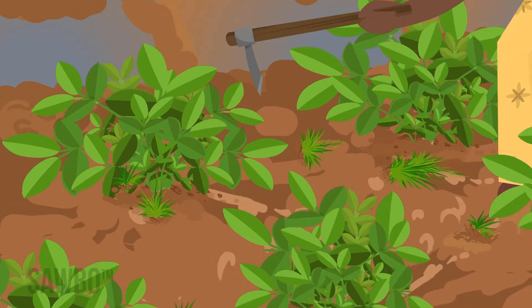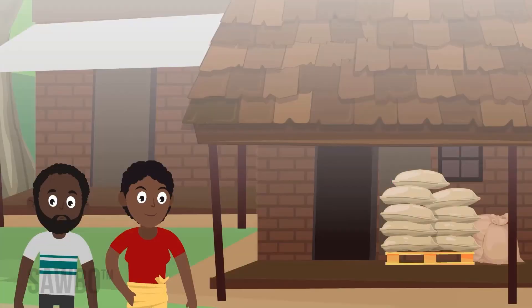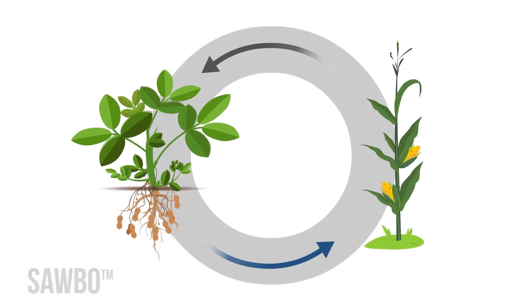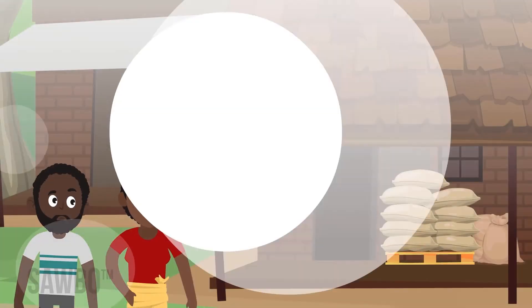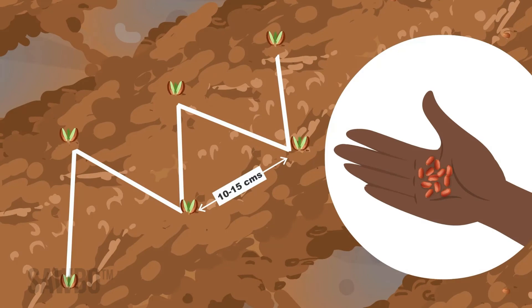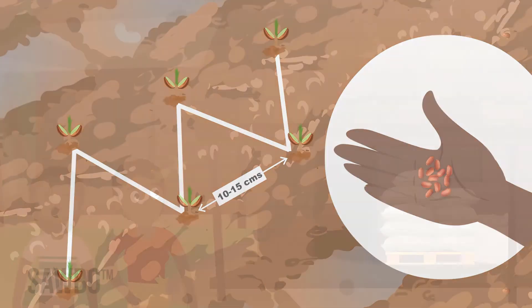Remember, the best field will have sandy soil, be prepared before the rains, and did not grow groundnuts last season. Choose good quality seeds of a good variety and test the germination before planting. Plant the seed as soon as the rains come and plant no more than 10 or 15 centimeters apart depending on the size of your seed, and plant even closer if you saw less than 30 sprouts during your germination test.